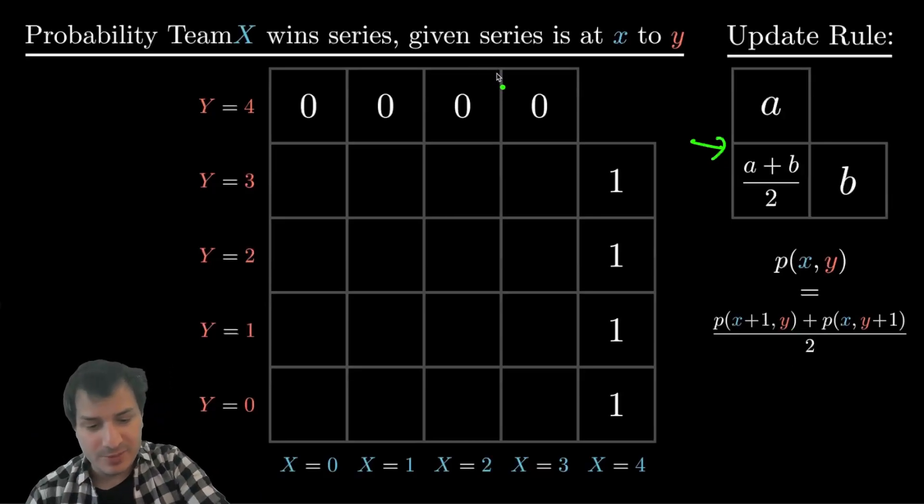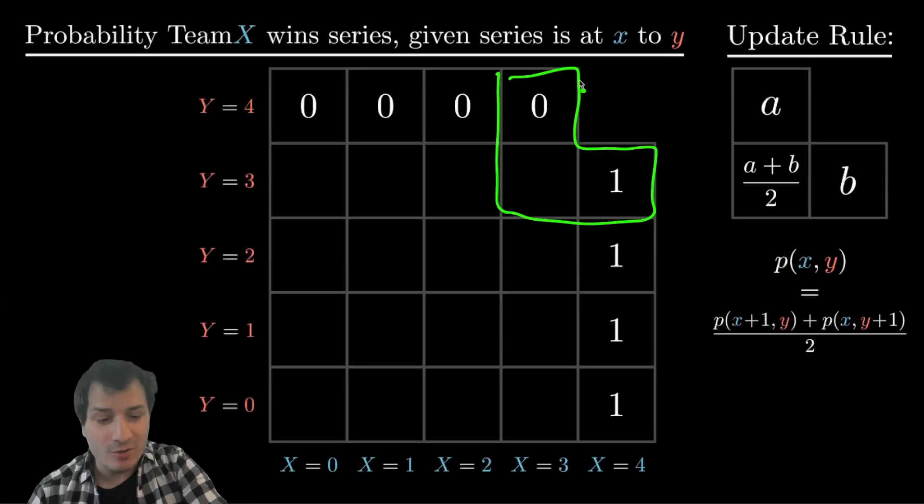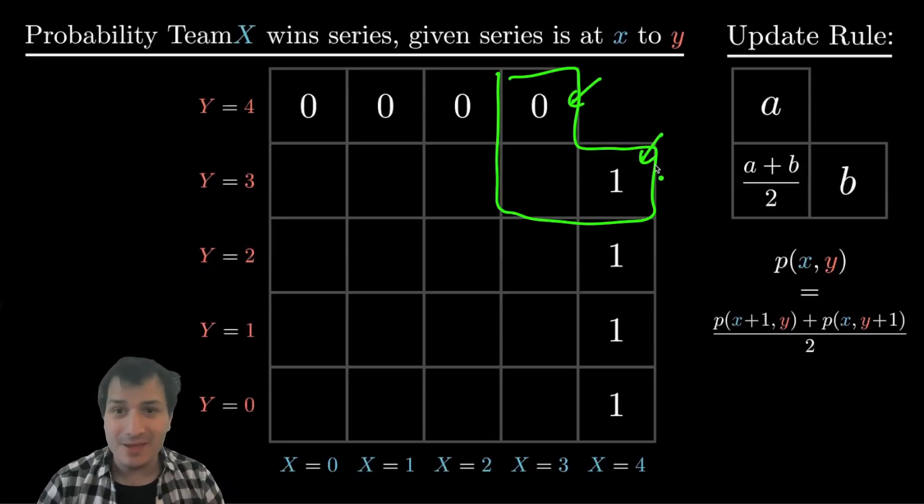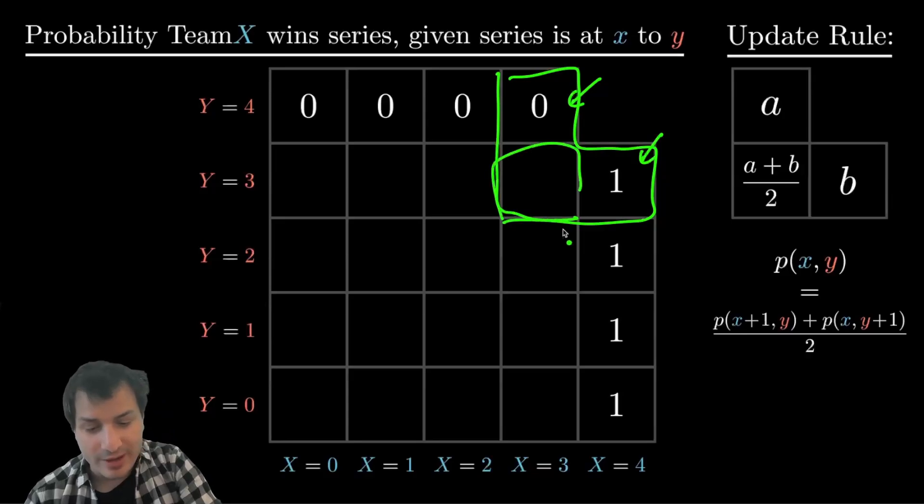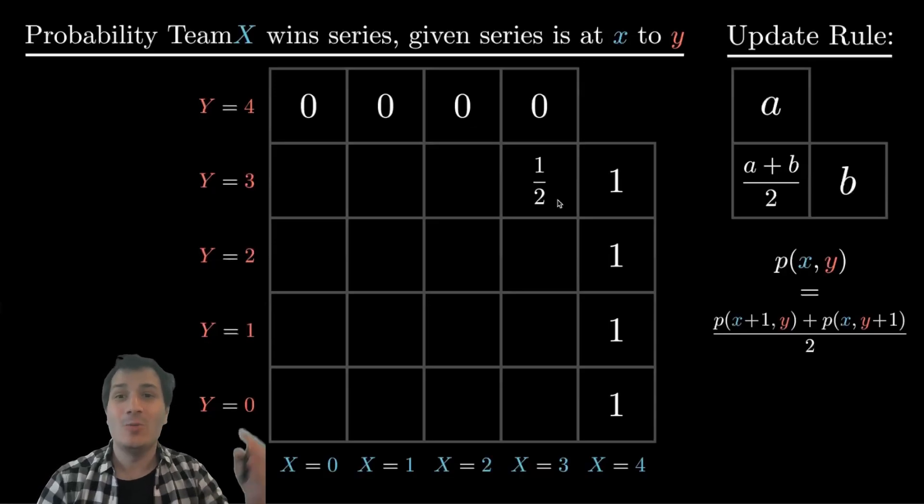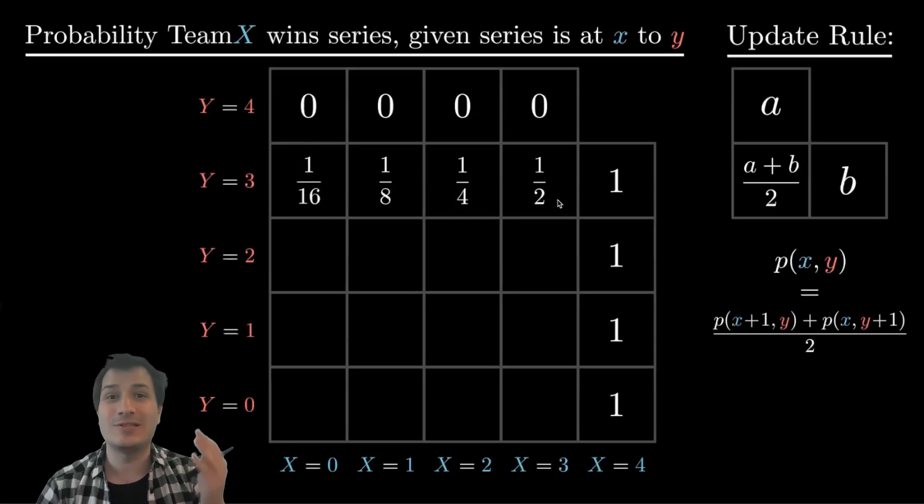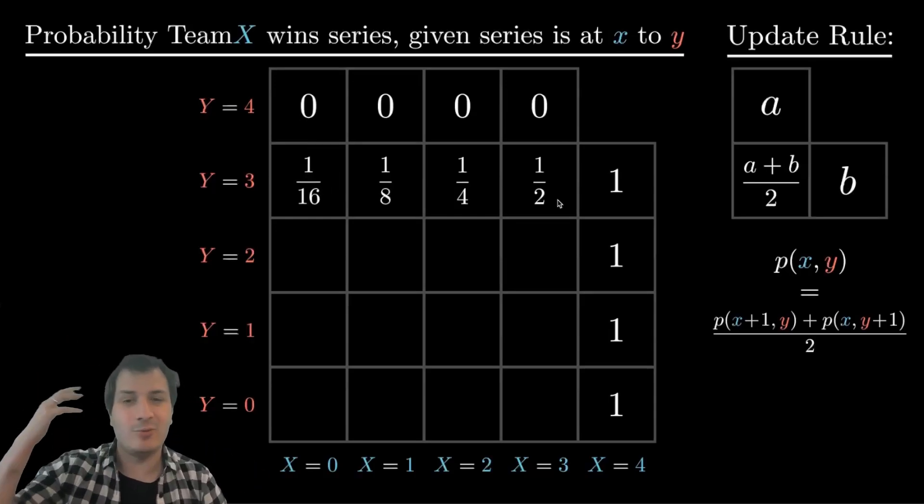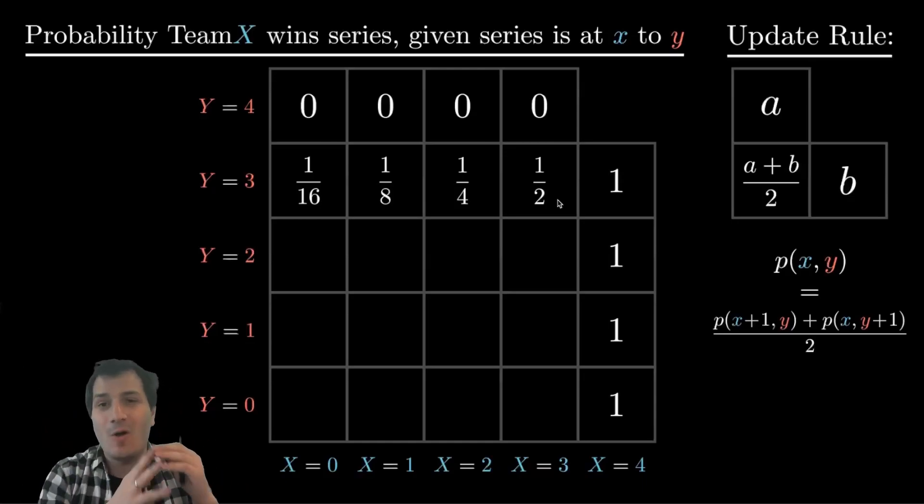Where can we apply this update rule? Well, the first place is in this little top bit where we know the probability up here and the probability over here. So we can combine them by the update rule to get the probability of this square where x equals three, y equals three. And that probability is simply one half. The average of zero and one is a half. Now that we have zero and a half, we can also work our way and figure out that entire row where y equals three. So the average of a half and zero is a quarter. The average of a quarter and zero is an eighth. And the average of an eighth and zero is one sixteenth. And we can see actually these make perfect sense. If y is at three, they're one game away from winning the series. The only way that x can win is to win all the next games in a row. So they either have to win one, two, three, or four games in a row to win the series. Those are the probabilities a half a quarter and eight a sixteenth.